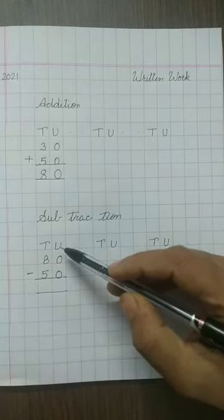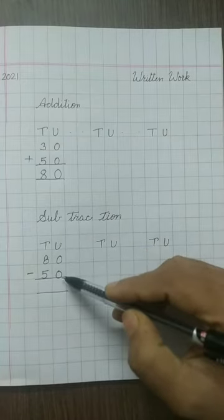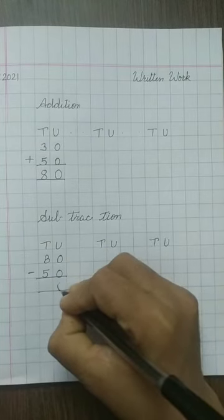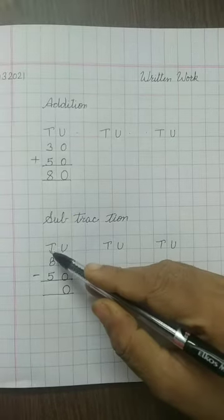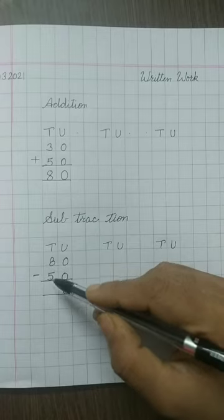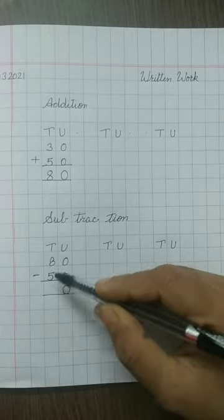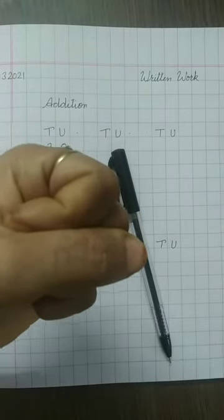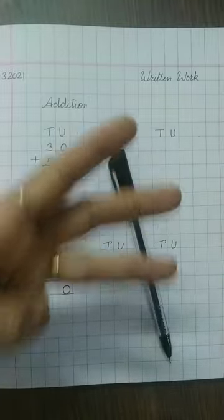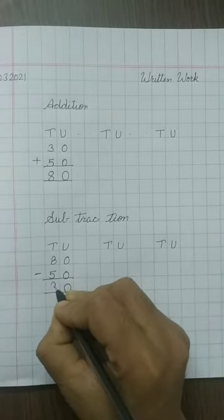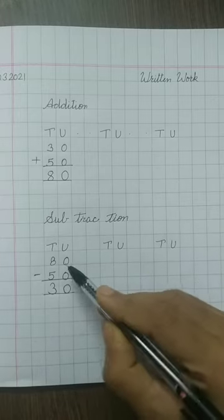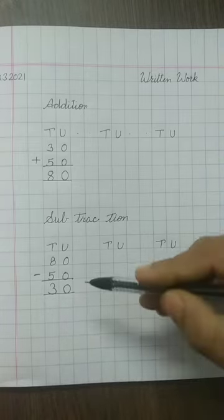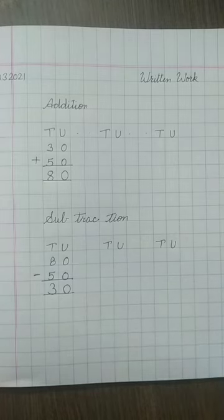Kids, again first we will solve the unit side. Before solving the sum you have to read the sum. 0 minus 0 — here both digits are 0, so 0 minus 0 is equal to 0. Unit side solved. Now come to the tens side. Before solving, read the sum: 8 minus 5. Here 5 is the lower digit and 8 is the upper digit. So we will throw 5 and count till 8 — make a fist. What comes after 5? 6, 7, 8. Count the fingers: 1, 2, 3. The answer is 3. We will write 3. In the end, read the whole sum: 80 minus 50, and the answer is 30. Kids, you have to do 2 more sums. Work should be neat and clean, information should be correct, and do practice of addition and subtraction. Take care, bye bye.